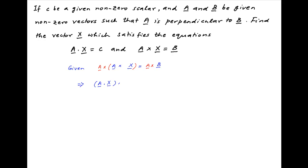The left hand side is equal to (a dot x) times vector a, minus (a dot a) times vector x, and this is equal to the right hand side which is a cross b.